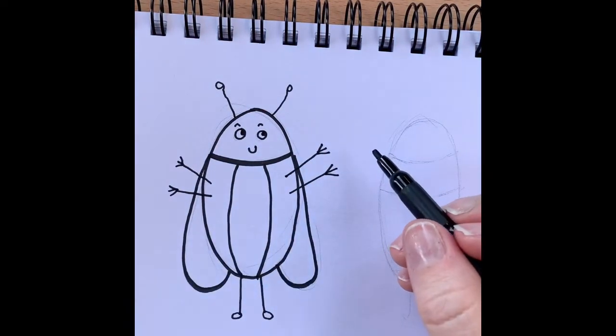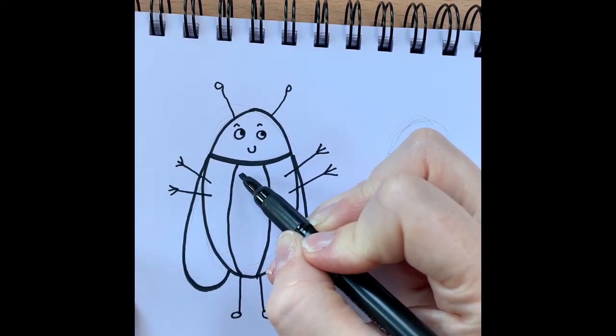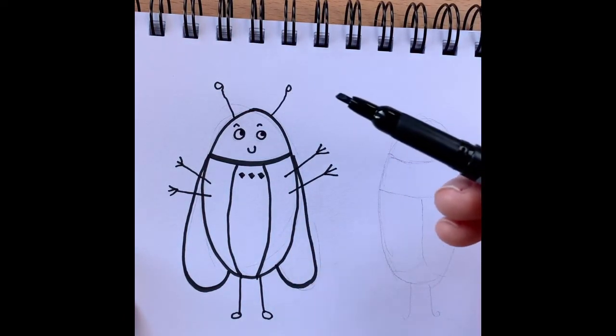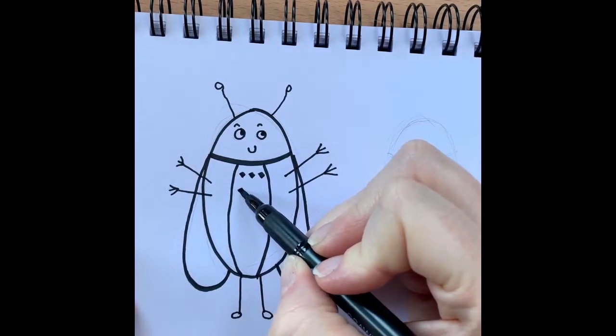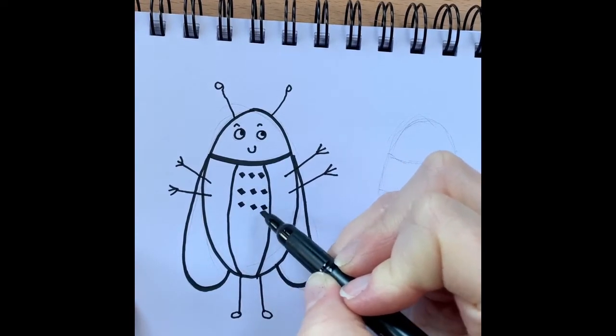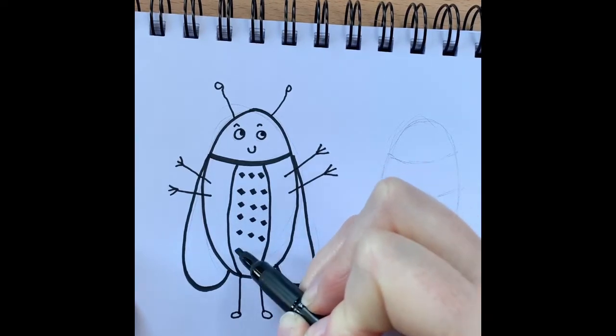Now what makes each bug different is that we're going to do different patterns. So we're going to start off doing some shapes in the middle. Now my pen has got an angle. Can you see? So this helps it to make a diamond shape. But you can do any shape. You could draw a diamond or you could do circles. Just having lots of patterns.